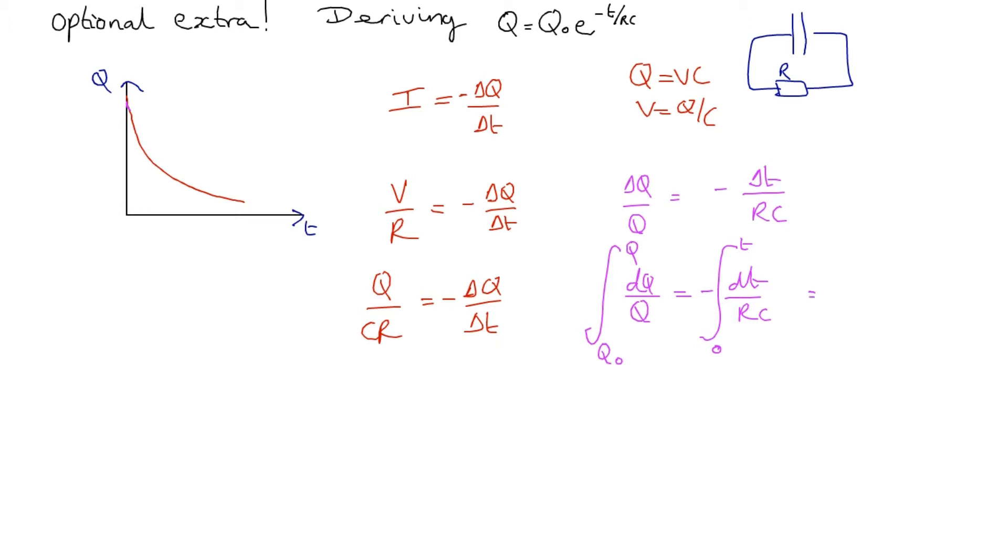If we do that integration, hopefully you'll agree that we get the natural log of Q between Q and Q₀. On the other side, we get -T/RC between T and zero. If we evaluate those limits, we get ln(Q) - ln(Q₀) = -T/RC.